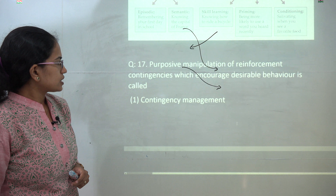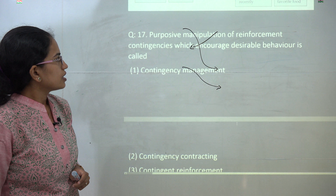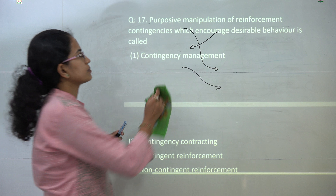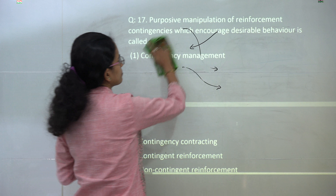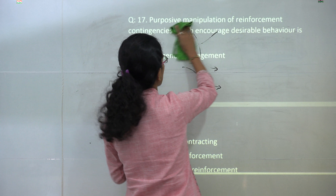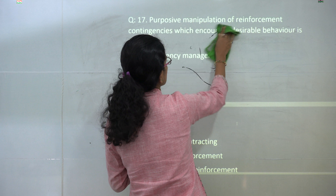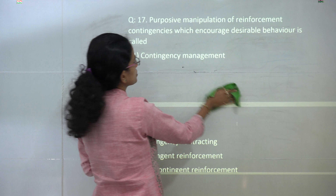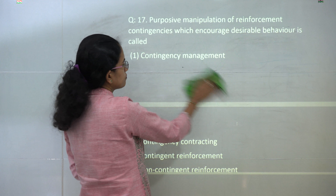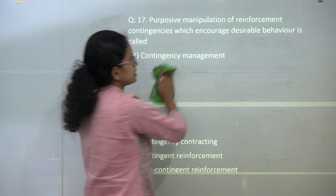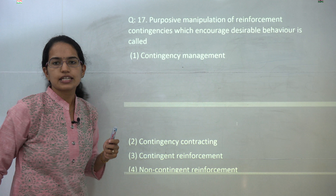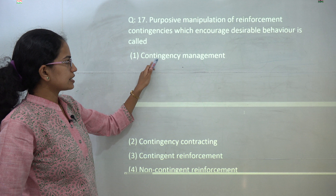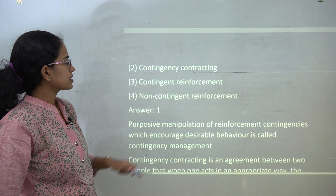The next question is a direct definition question for contingency management. Contingency management implies a purposive manipulation of reinforcement contingencies that encourage certain behavior. So 'contingency management' is the correct answer.